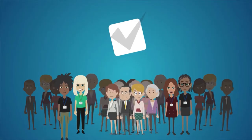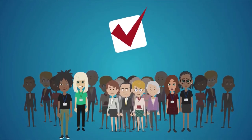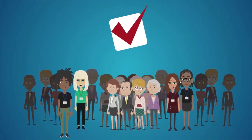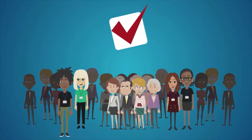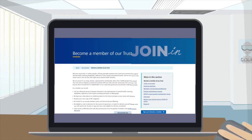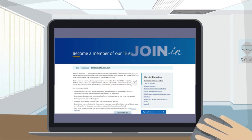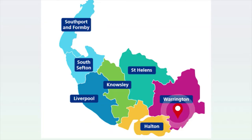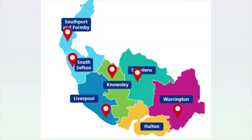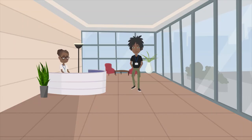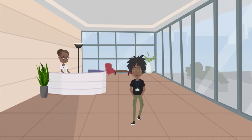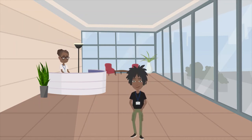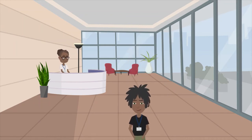Our members vote to elect the Trust governors and can also stand for election themselves. You just need to be at least 16 years old, and to be a public governor you must live within the constituency you wish to represent. Or to be a Service User Carer Governor, you must have accessed Mersey Care Services as a service user or the carer of a service user over the previous three years.